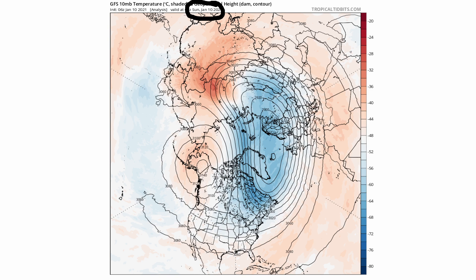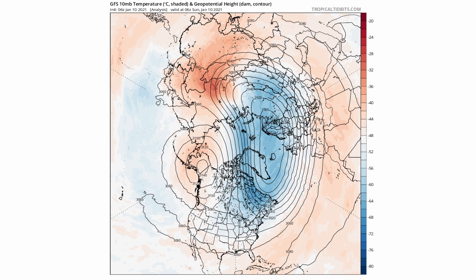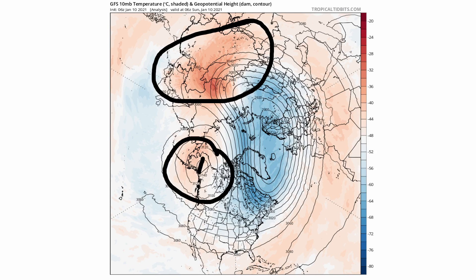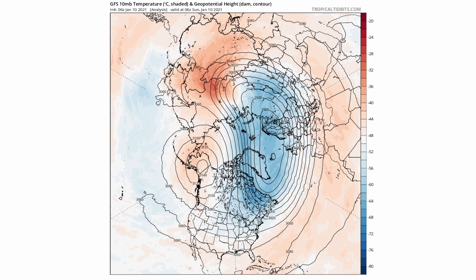You can't take exactly what's happening at 10 millibars and translate it directly to the surface — you have to wait about 10 to 14 days for that to occur because of how high up it is. So for example, this is the polar vortex for January 10th. If you add 10 to 14 days, that's January 20th to 24th when you could expect the surface to look something like this. You can tell where the general areas of troughing and ridging will be, and that helps determine the overall atmospheric pattern. Oranges and reds indicate warmer temperatures or ridging; blues indicate troughing.